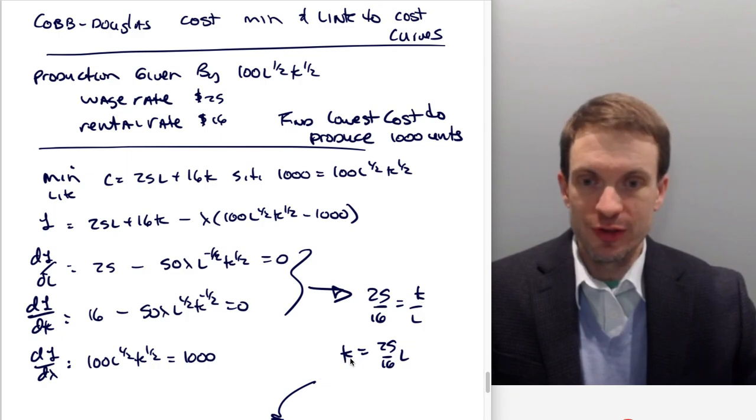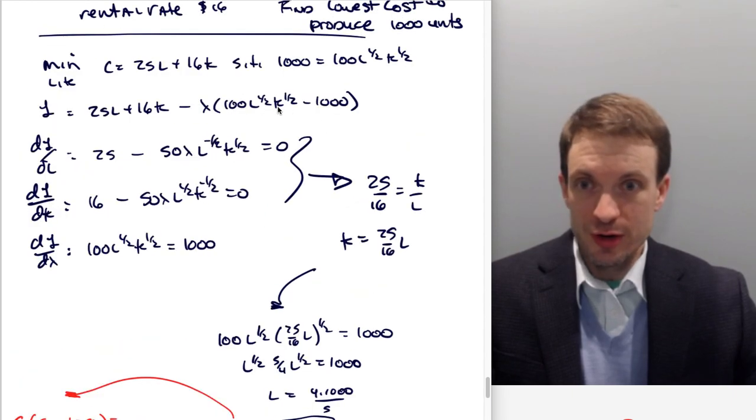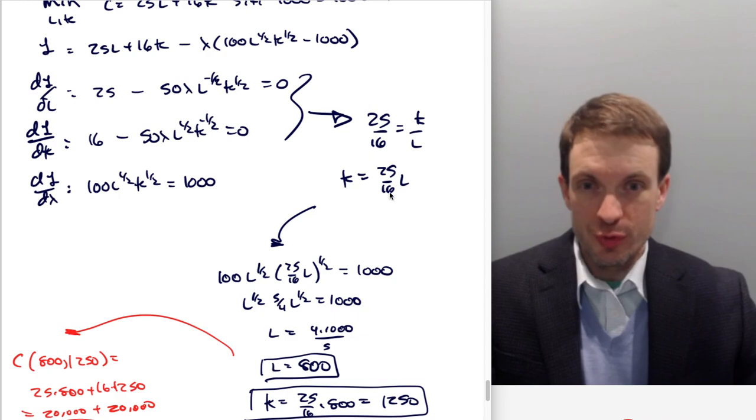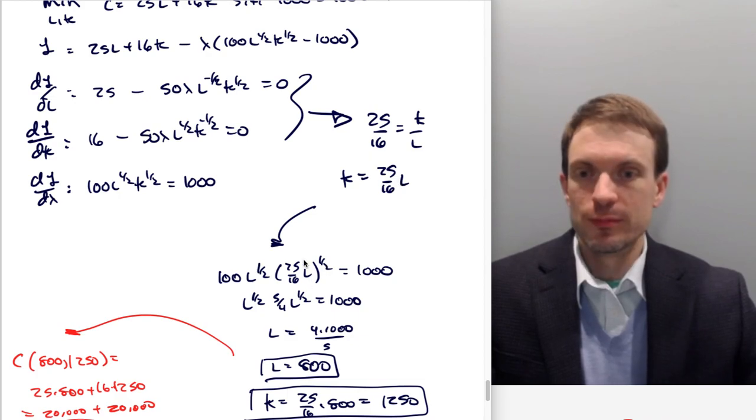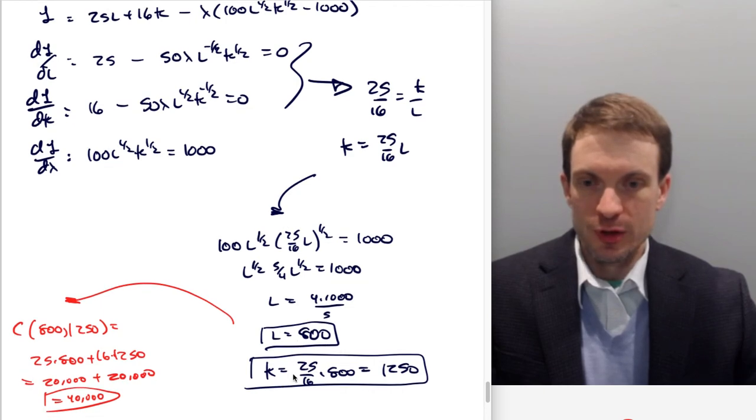Then solving, K is equal to 25 over 16 L and I'm going to plug that into my constraint. So I'm going to replace capital with 25 over 16 L. And then it's just algebra cleaning up. Notice I picked 25 and 16 cleverly because square root of 25, square root of 16 is 5 fourths. And then L to the half, L to the half, that's just L. Here I've multiplied by the reciprocal to get 4,000 over 5, which is 800.